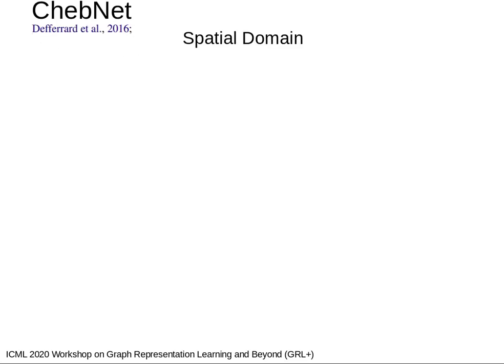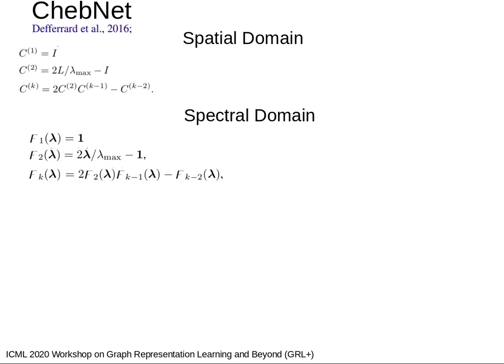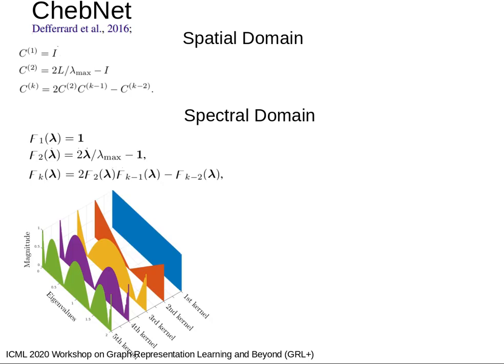ChebNet is usually presented by its spatial form. However, its spectral form is also known, and here is each convolution support's frequency responses.